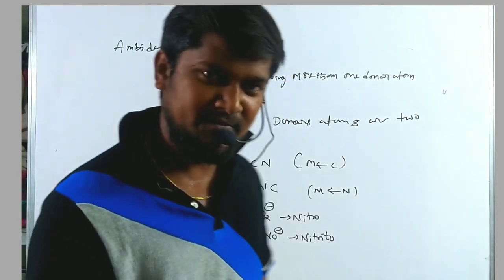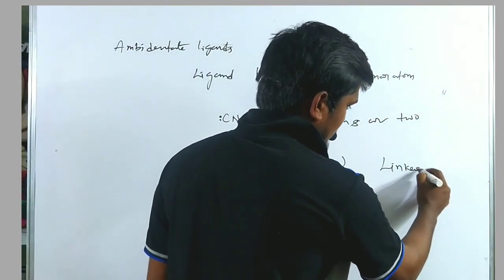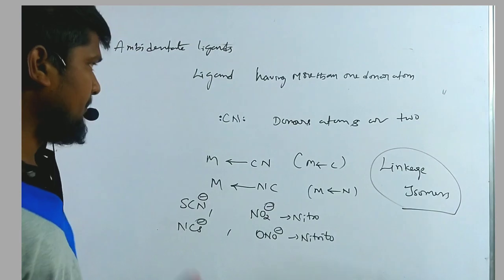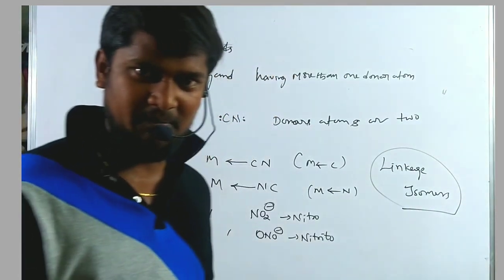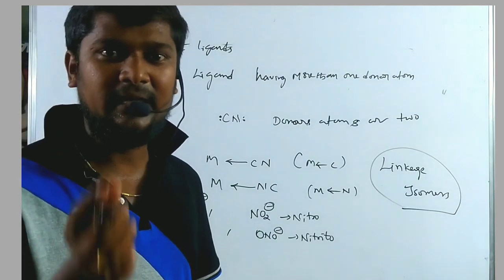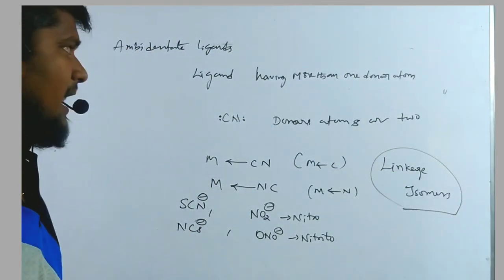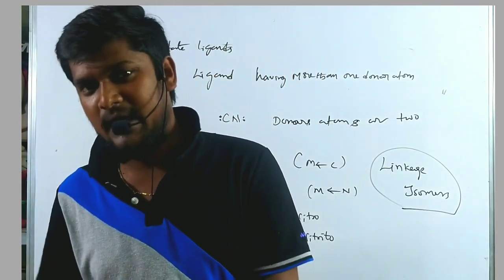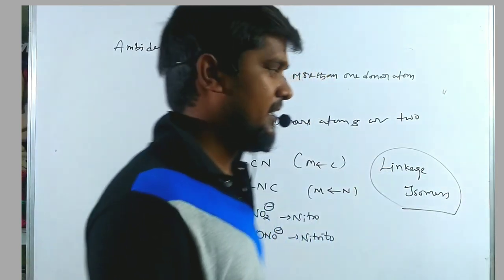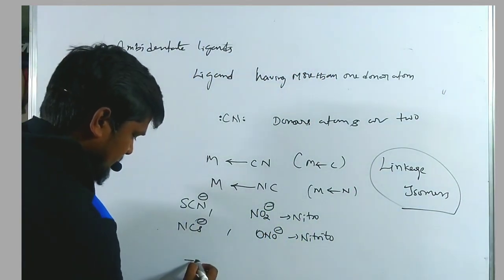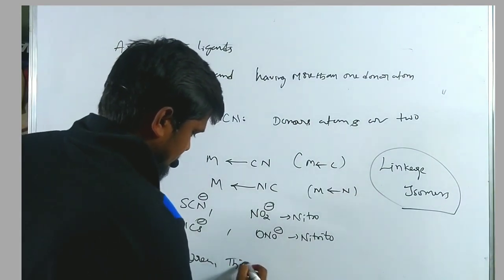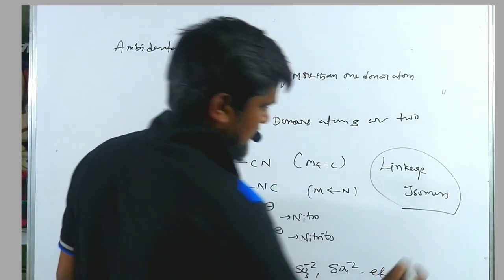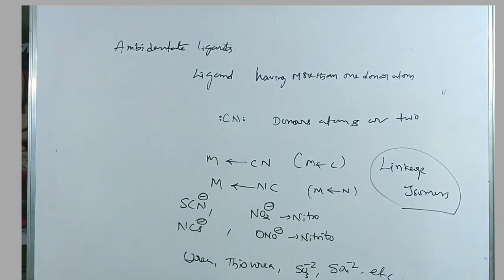Generally, ambidentate ligands form linkage isomers. Linkage isomers arise from ambidentate ligands. A monodentate ligand having more than one donor atom, which forms the complex with both donor atoms, is said to be an ambidentate ligand. Further examples are urea, thiourea, SO₃²⁻, SO₄²⁻, etc.